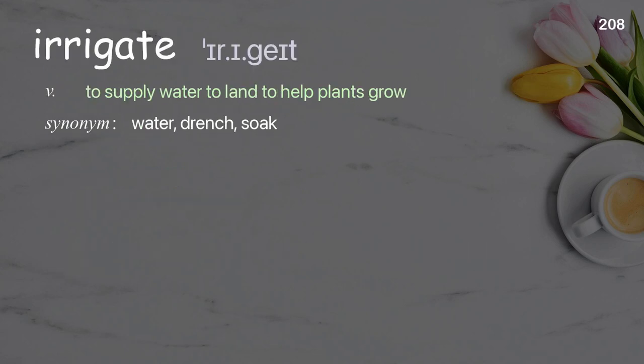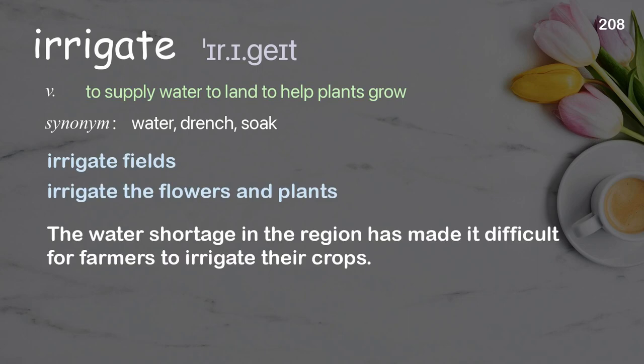Irrigate. To supply water to land to help plants grow. Examples: irrigate fields, irrigate the flowers and plants. The water shortage in the region has made it difficult for farmers to irrigate their crops.